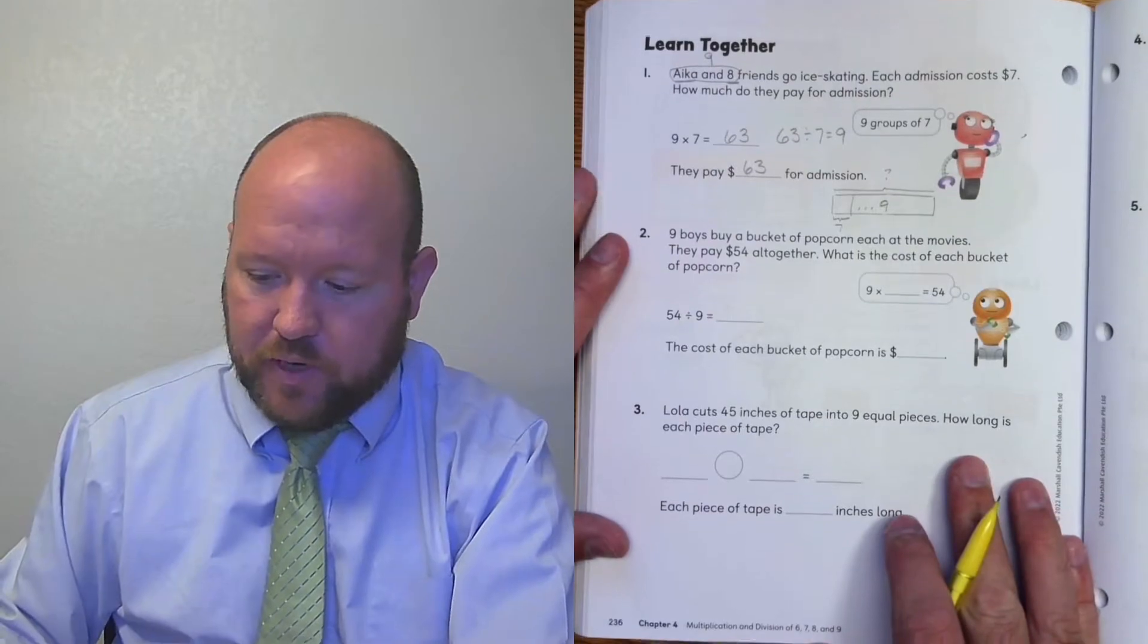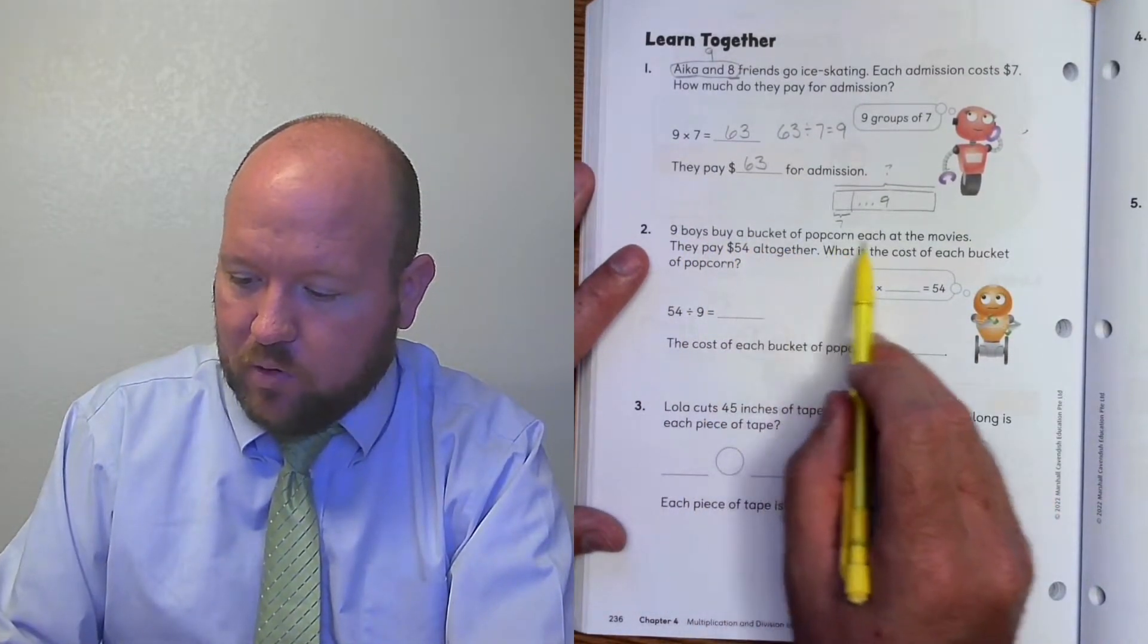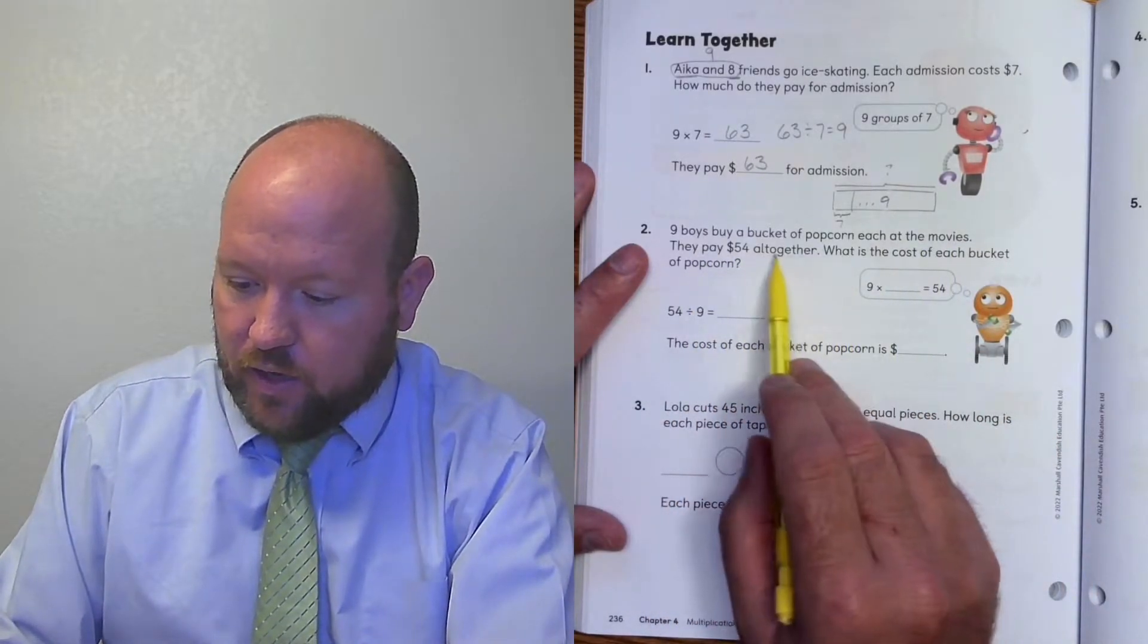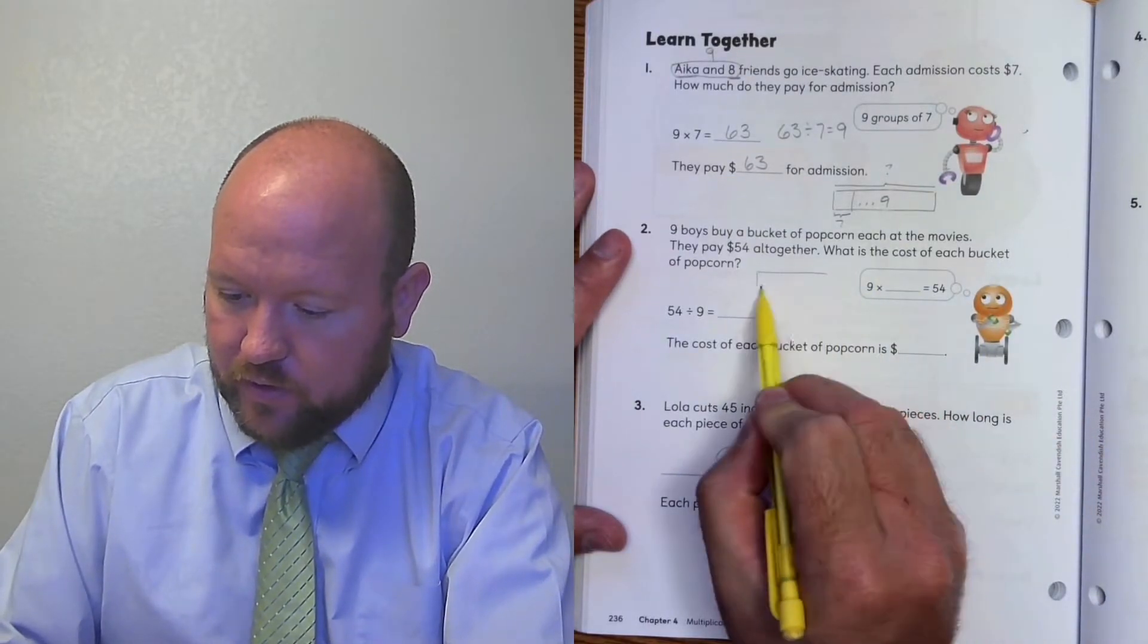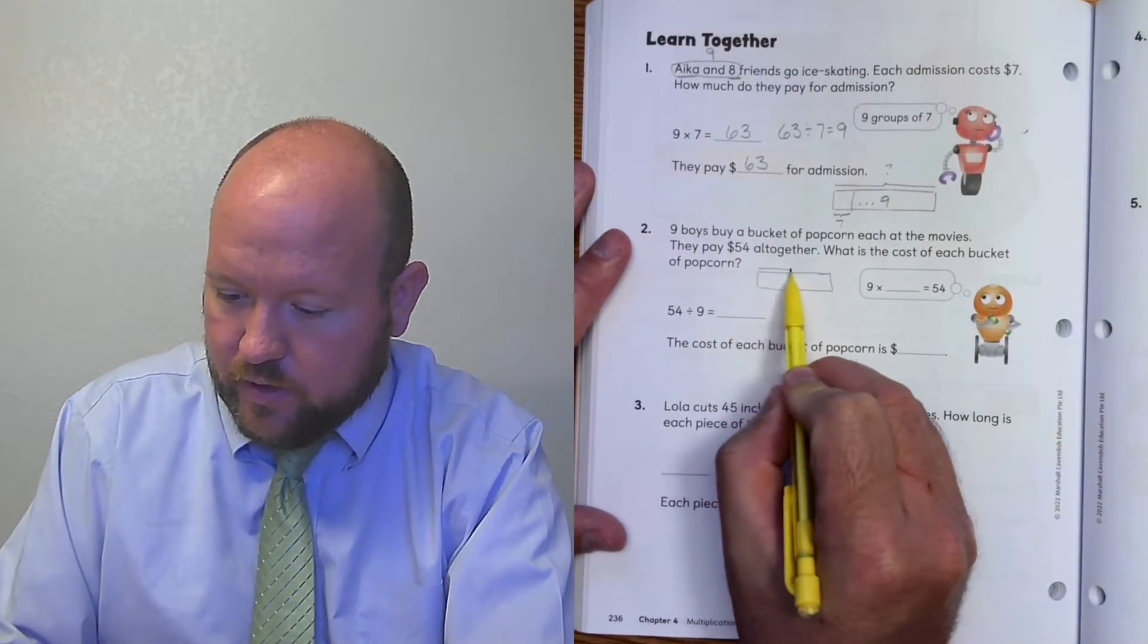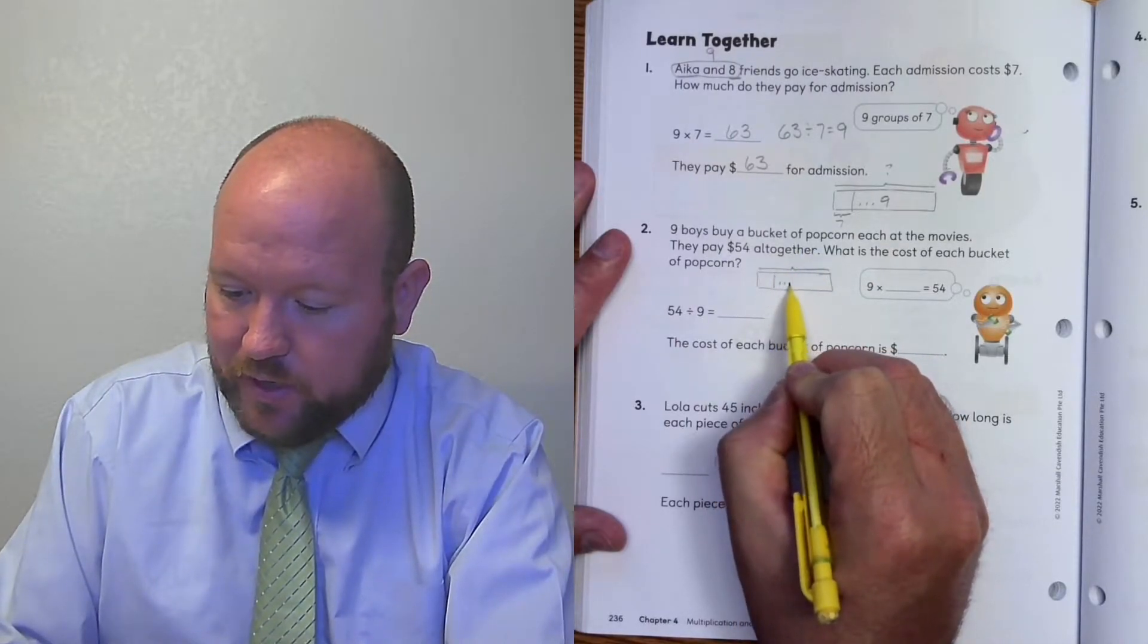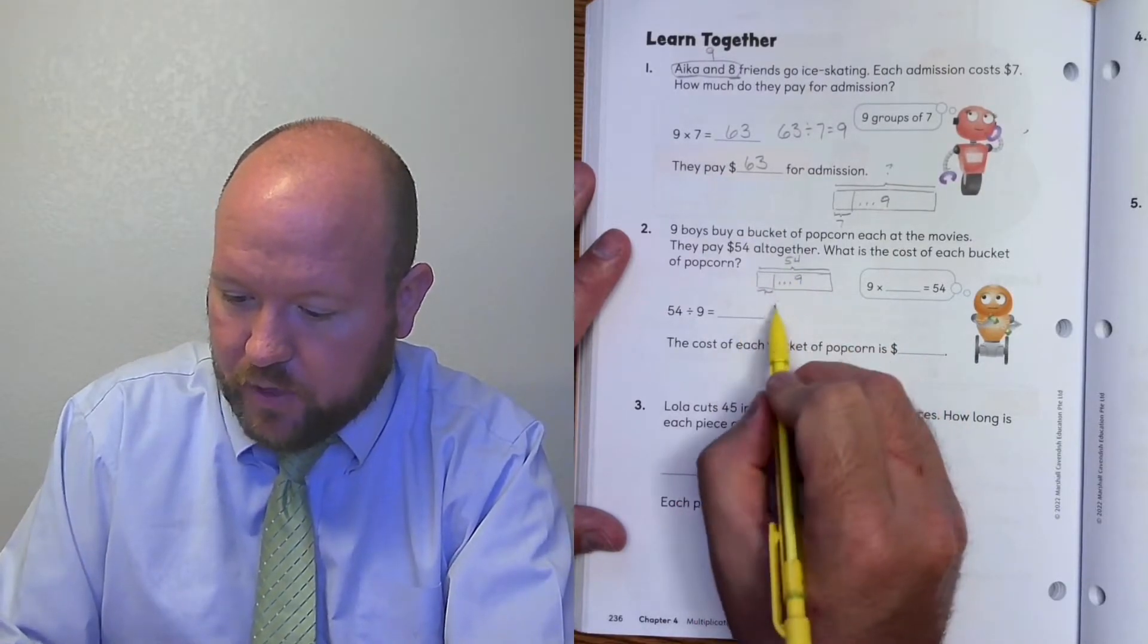Next one. 9 boys buy a bucket of popcorn each at the movie. They pay $54 altogether. What is the cost of each bucket? They buy 9 buckets. It costs $54. How much is each bucket?